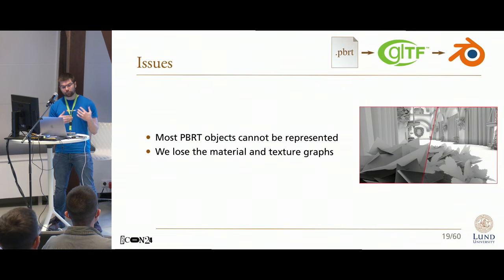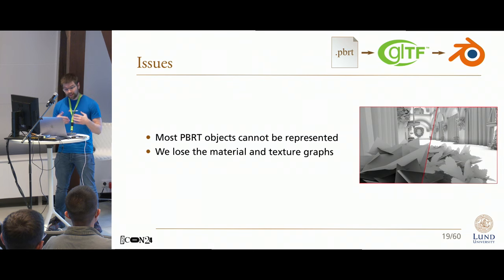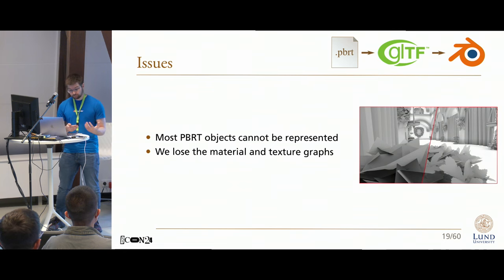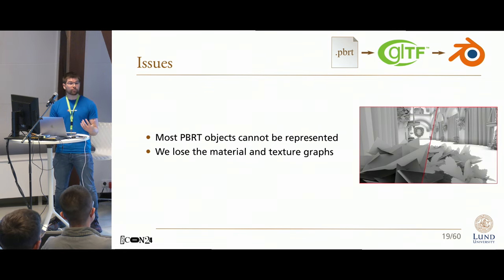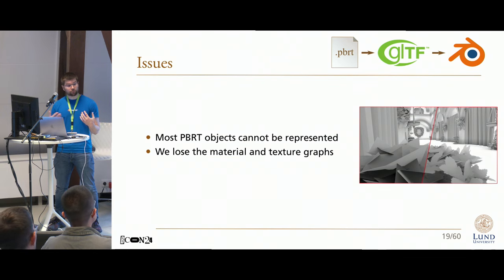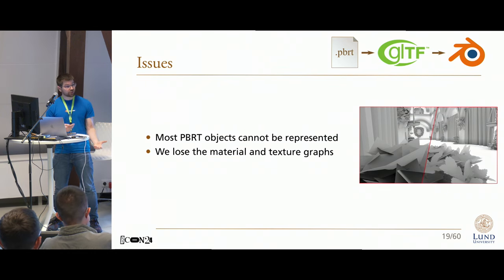But most crucially, while GLTF has a great material model, the one available in PBRT is substantially deeper with a full graph to describe mixing of both materials and textures. As such, in my converter, I was forced to adjust all materials or simply drop all of that information. Luckily, for my earlier projects, I was only interested in ambient occlusion rendering, so I didn't really care about losing all of that material information. However, going forward, that is something that I'm going to need — hence all of this effort.